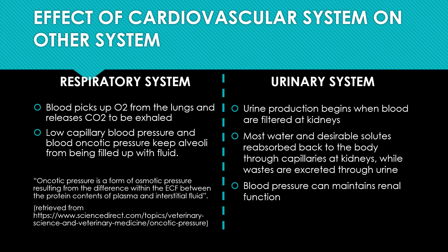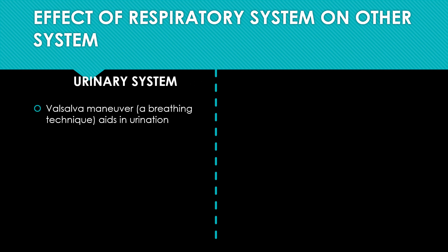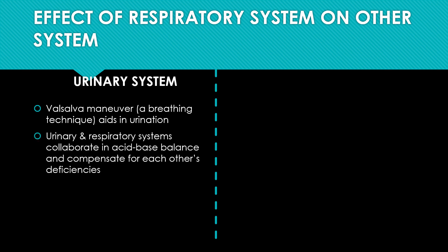Blood pressure can maintain normal renal function. If blood pressure is high, blood vessels can constrict and narrow, damaging them throughout the body including the kidneys. The respiratory system can also affect the urinary system: the Valsalva maneuver, which is a breathing technique, aids in urination because intra-abdominal pressure is raised, helping urine outflow. The urinary system and respiratory system collaborate in acid-base balance and compensate for each other's deficiencies, meaning both systems work together to maintain normal pH.